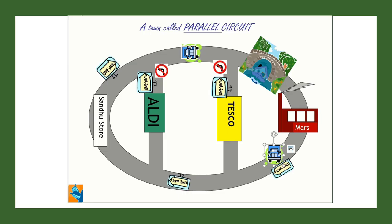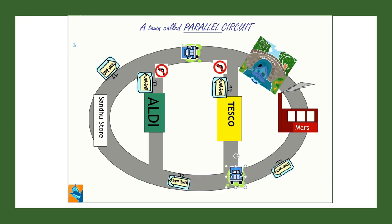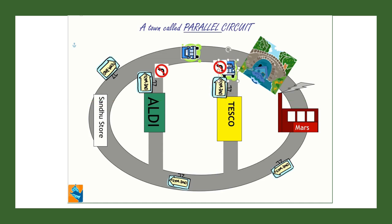We had lots of problems with our old model, so we're going to look at a new model. This is a town called Parallel Circuit. You can see we've still got the three shops as we had before. All the roads are still one way, but this time there's more than one path for the current to take — that's why it's a parallel circuit. I'm going to drive this lorry and we're going to see the three different routes it can take, setting off here at the one-way street. At this point we have a choice: we can either go to Tesco or go along the road.